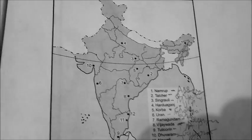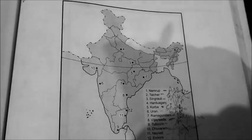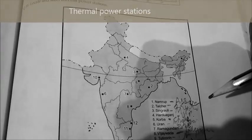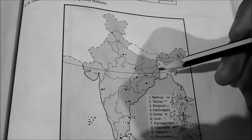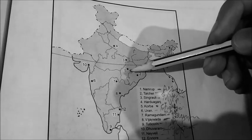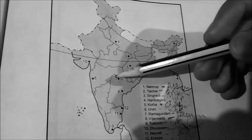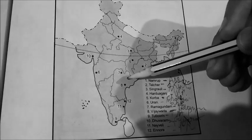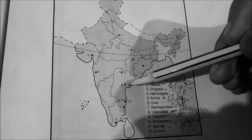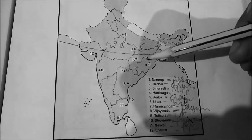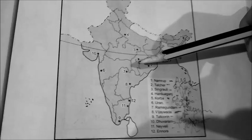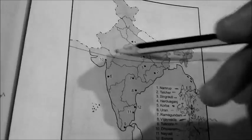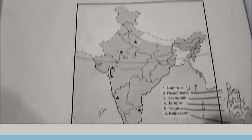Now the thermal power stations — a very vast list. Namrup is in Assam. Talcher is in Orissa. Singrauli is in Madhya Pradesh. Harduganj is in Uttar Pradesh. Korba is in Chhattisgarh. Uran is in Maharashtra. Ramagundam is in Telangana. Vijayawada is in Andhra Pradesh. Tuticorin is in Tamil Nadu. Dhuvaran is in Gujarat. Neyveli and Ennore are both in Tamil Nadu.